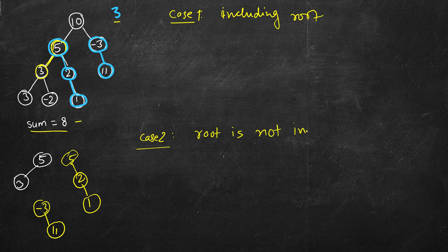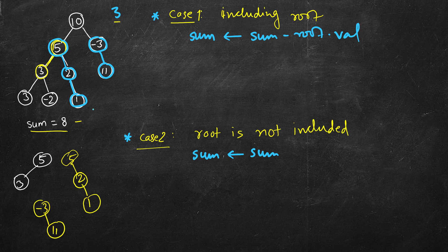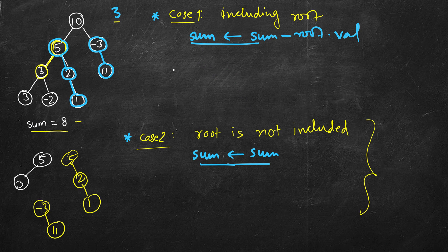In Case 1 (root included), the sum is updated to sum minus root.val. In Case 2 (root excluded), the sum remains the same since we have not included root. We explicitly divide into two scenarios: include the root and try to find the remaining sum below it, or exclude root and find the exact same sum in the left and right subtrees.